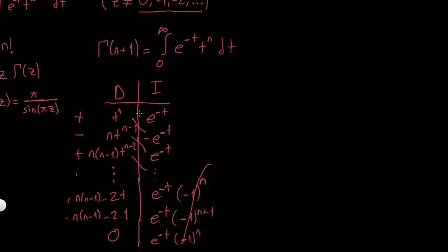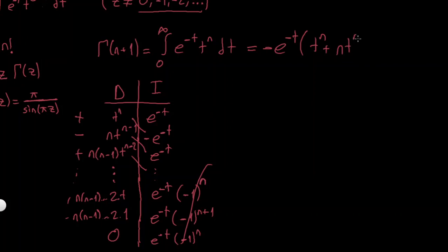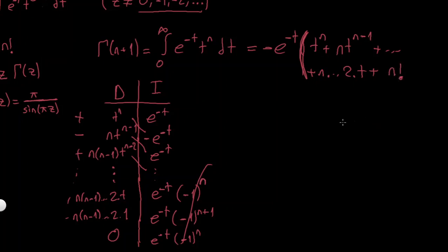So I can factor out -e^(-t) and write the whole expression as: -e^(-t) * (t^n + n*t^(n-1) + n*(n-1)*t^(n-2) + ... + n*(n-1)*...*2*t + n!). The last term is n factorial, which is just a constant, and the next terms after that are all zero.